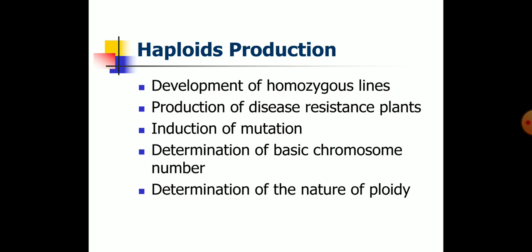Haploid plants provide a convenient system for the induction of mutations. Mutants from several plant species that are resistant to antibiotics, toxins, and herbicides have been developed. Haploid plants are useful in cytogenetic research; they help in determination of basic chromosome number and nature of ploidy.